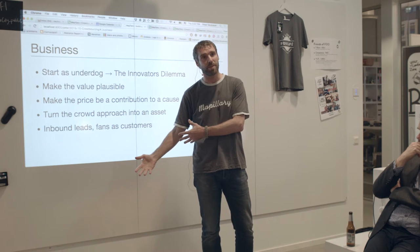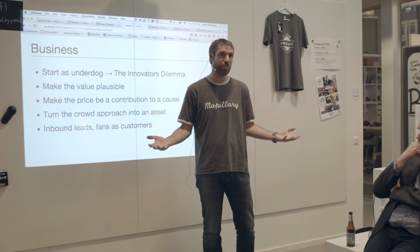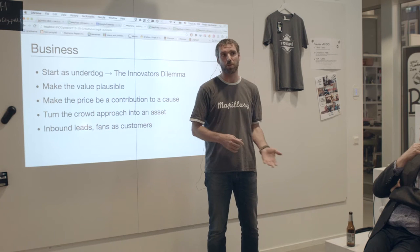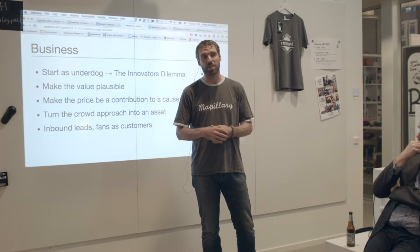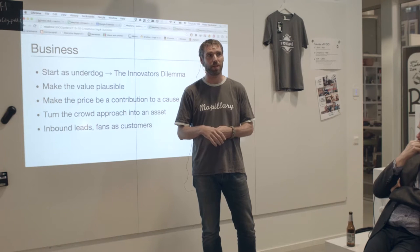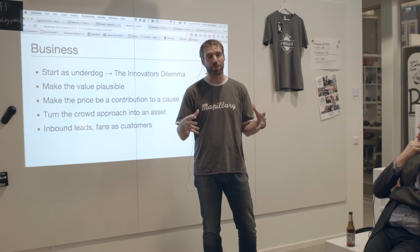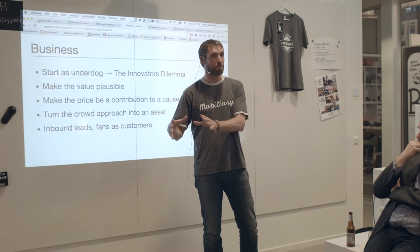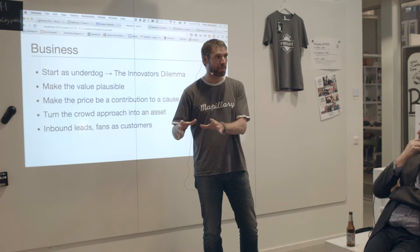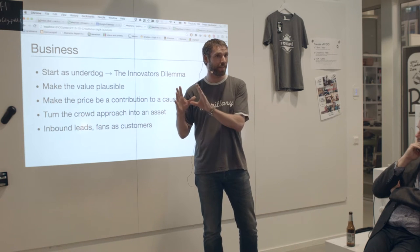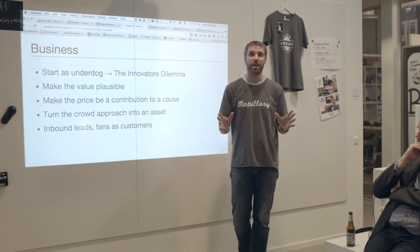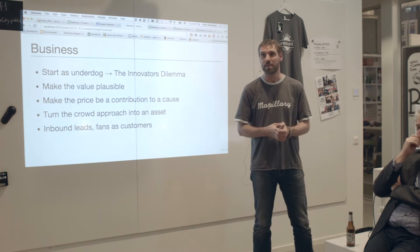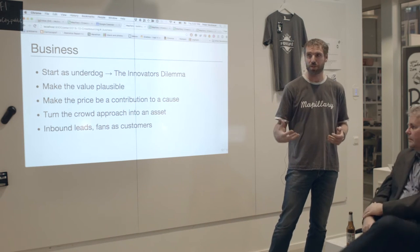The crowd approach into an asset is an interesting thing — you can be where others can't. You can have services or campaigns in slums in Lesotho. The Red Cross mapped Lesotho with around 50 contributors in one month, and that resulted in more contributions to OpenStreetMap than the whole of the USA in that month — over a million edits based on Mapillary pictures. Just 50 guys. Even a government would not be able to pull that off without insane amounts of cost.